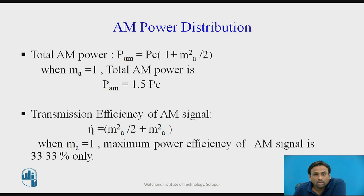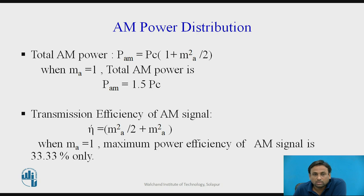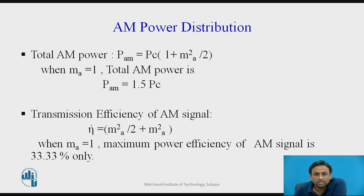The total power required to transmit an AM signal is PAM = Pc·(1 + m²/2). Maximum power is required when m = 1, since modulation index lies between 0 and 1, giving PAM = 1.5·Pc. The efficiency of an AM signal is m² / (2 + m²). When m = 1, efficiency is only 33.33%, so the efficiency is very low in AM.